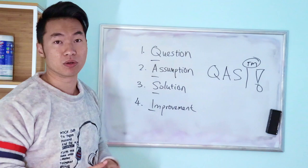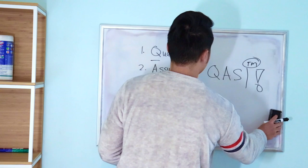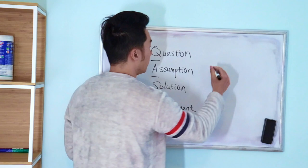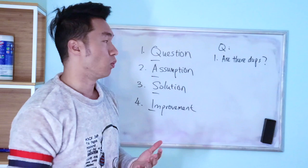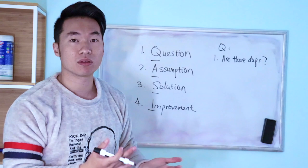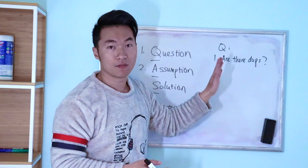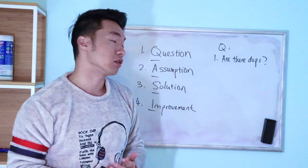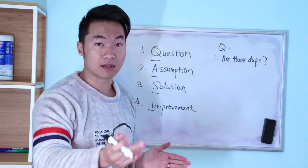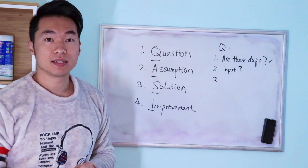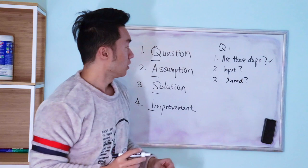The first step is Question. So the first thing to clarify is: are there duplicates? When you get an array of numbers, you want to clarify whether there are duplicates because that impacts your solution. It's very different if there are no duplicates and you're only asked to return top K versus if there are duplicates. The second question is: what is the input space? And the third is: is the array sorted in any order?